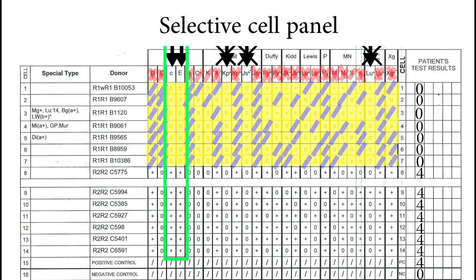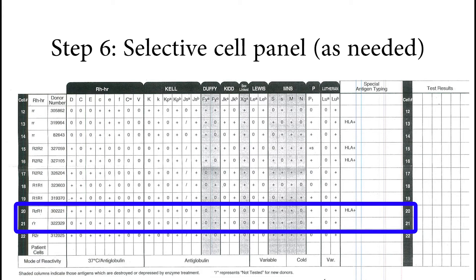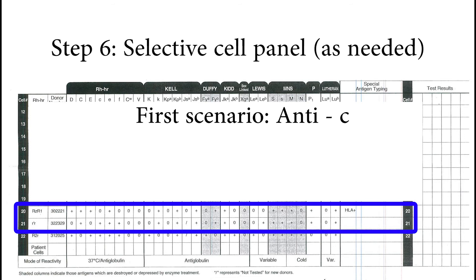Step 6: selective cell panel. A selective cell panel is when we do not use the whole panel but instead select certain cells from the panel that help identify the antibody. In this case we have little c and big E left. We are looking for cells that are homozygous little c positive, and another cell that is little c negative and homozygous big E positive. With that in mind, I choose cells number 20 and 21: cell 20 is homozygous for big E and little c negative; cell 21 is homozygous for little c and big E negative.